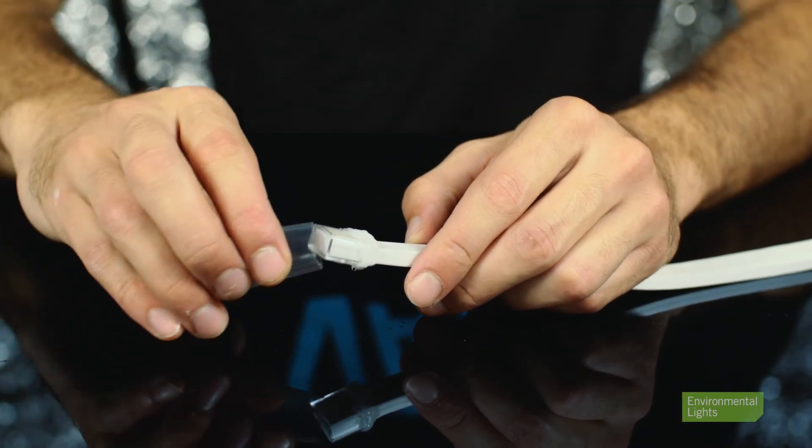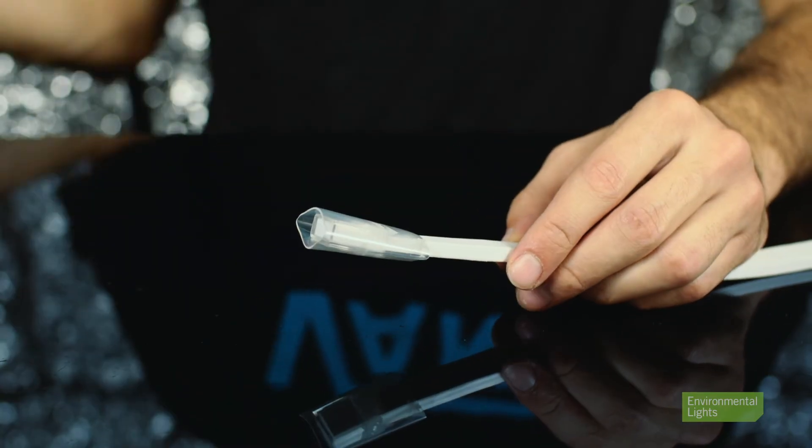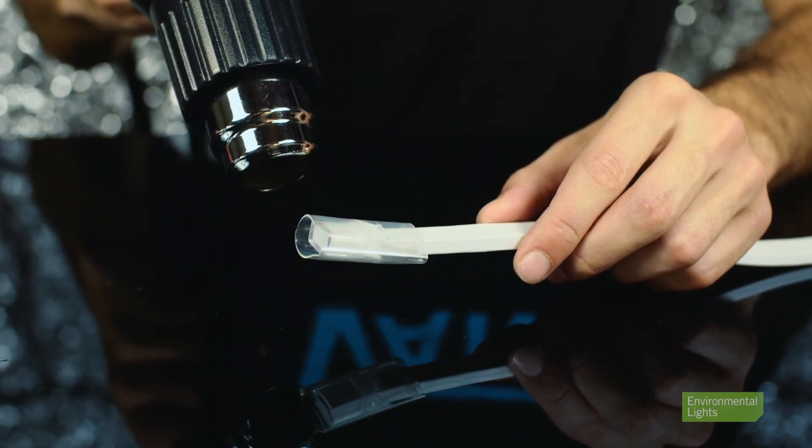Now you can slide the heat shrink tube over everything and use the heat shrink gun to apply heat and seal everything in place.